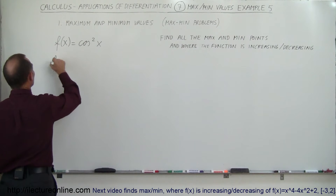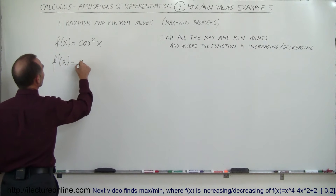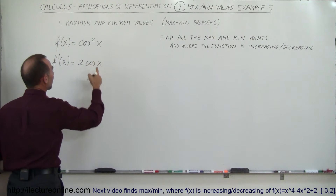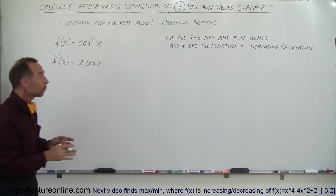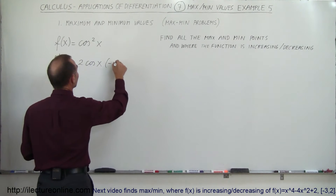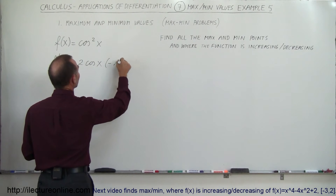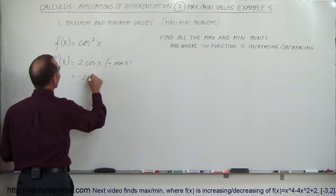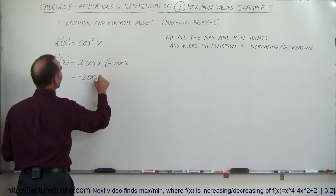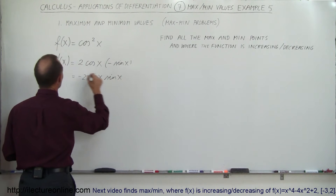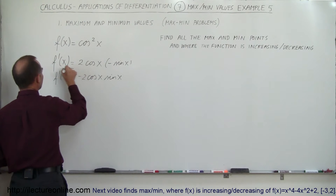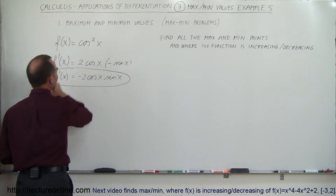The derivative f prime of x is going to be two times the cosine of x to the first power, times the derivative of the cosine, which is negative sine — so minus sine of x. That means f prime of x equals minus two times the cosine of x times the sine of x. Let's circle that, we'll need it later.